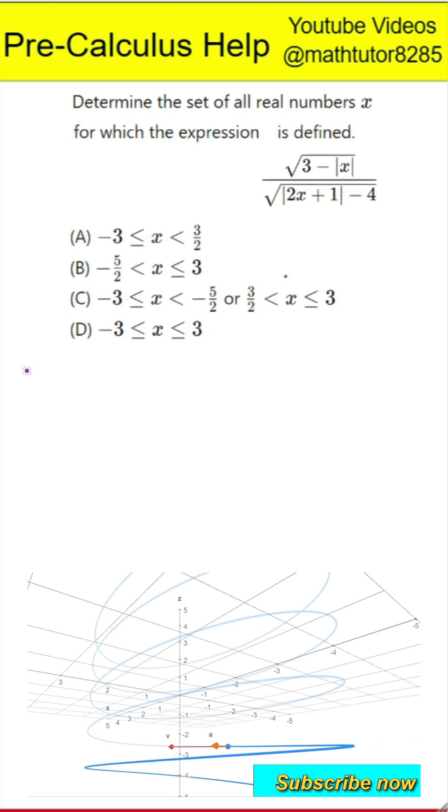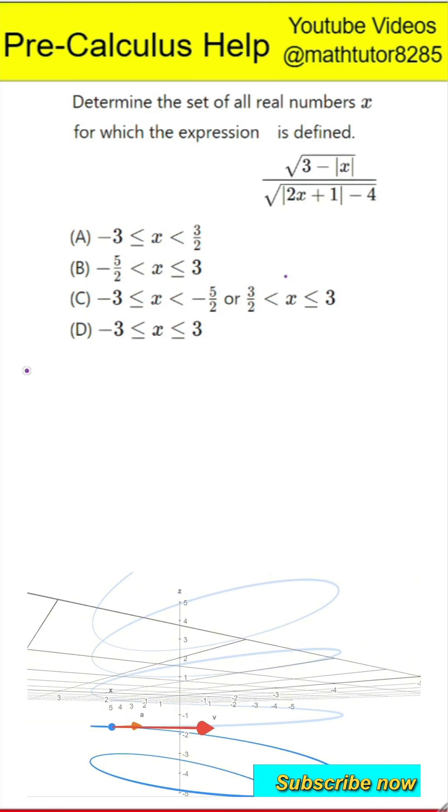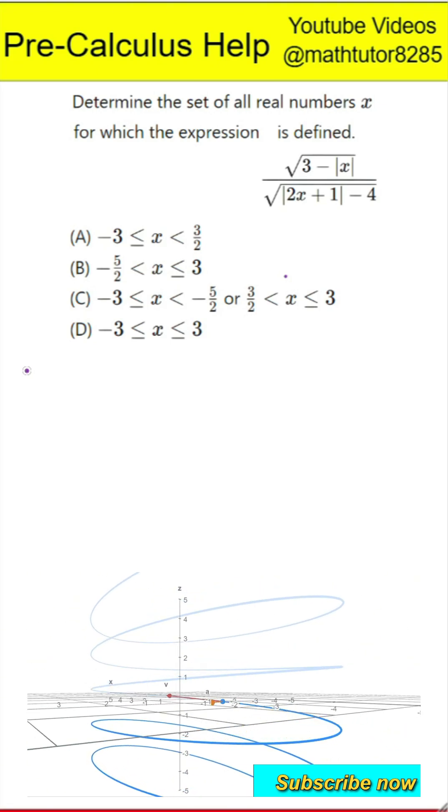Option C: x is between negative 3 and negative 2.5, not including negative 2.5, or x is between 1.5 and 3, not including 1.5 but including 3. Option D: x is between negative 3 and 3, including both ends.